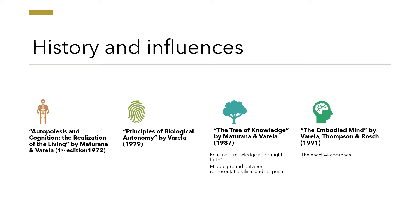In 1972, Maturana and Varela published a book called Autopoiesis and Cognition, which introduced the concept of autopoiesis referring to a system being capable of reproducing and maintaining itself. In Principles of Biological Autonomy, Varela elaborated on the concept of autonomy and biological systems. Then afterwards, in The Tree of Knowledge, written by Maturana and Varela and published in 1987, the term enactive was proposed to evoke the view that when it comes to knowledge, what is known is brought forth — it's not just passively out there — which is in contraposition with the more classical views of cognitivism or connectionism.